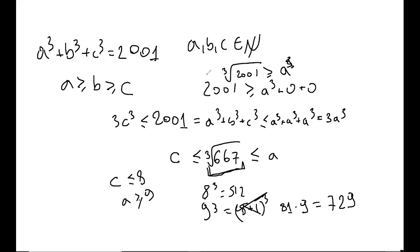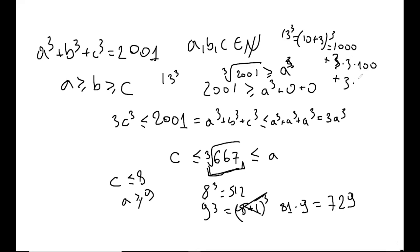Which number is good enough here? This is going to be about 12-point-something, because 13³ = (10+3)³ = 1000 + 3×3×100 + 3×9×10 + ... which is already greater than 2001. So a < 13, meaning a ≤ 12. Combined with a ≥ 9, we get 9 ≤ a ≤ 12. Now you could go over all cases: a = 9, 10, 11, 12, and do similar estimates for b.